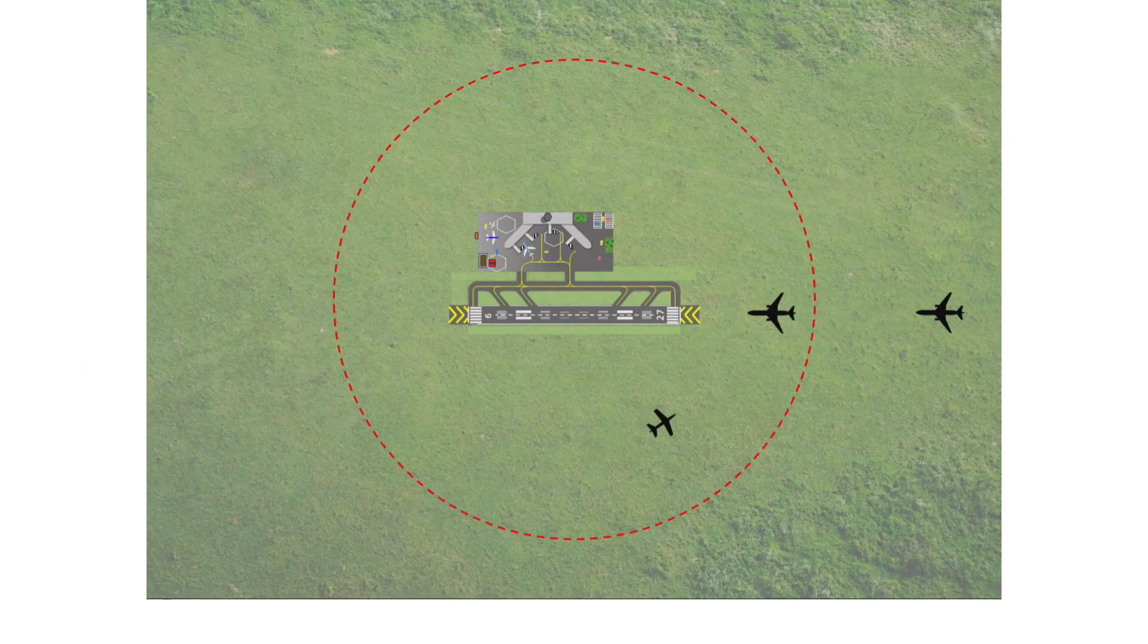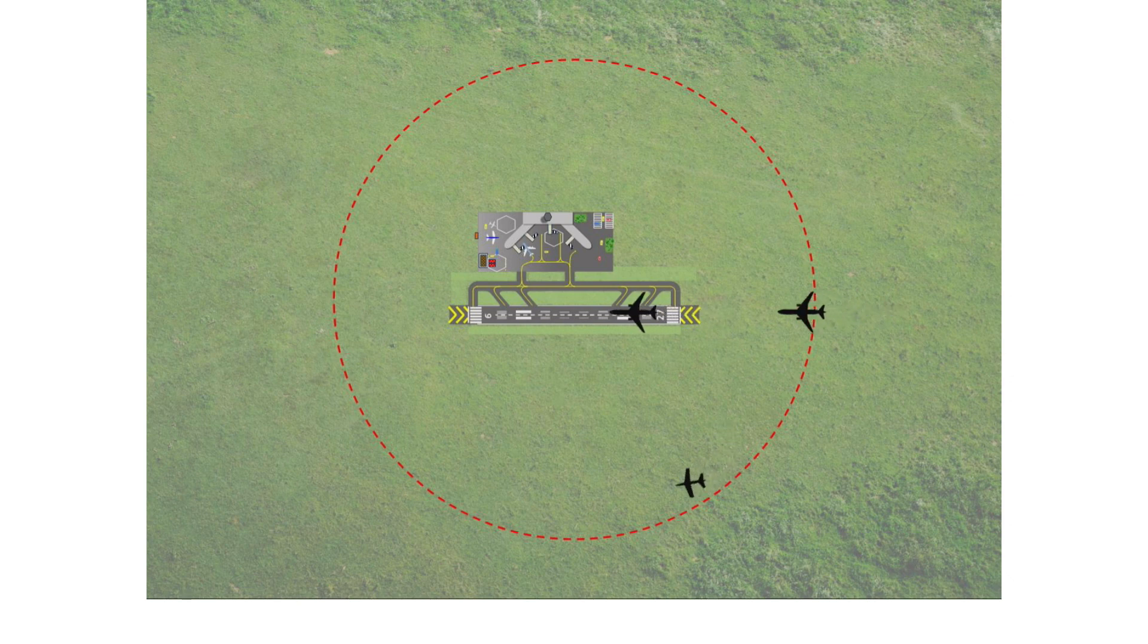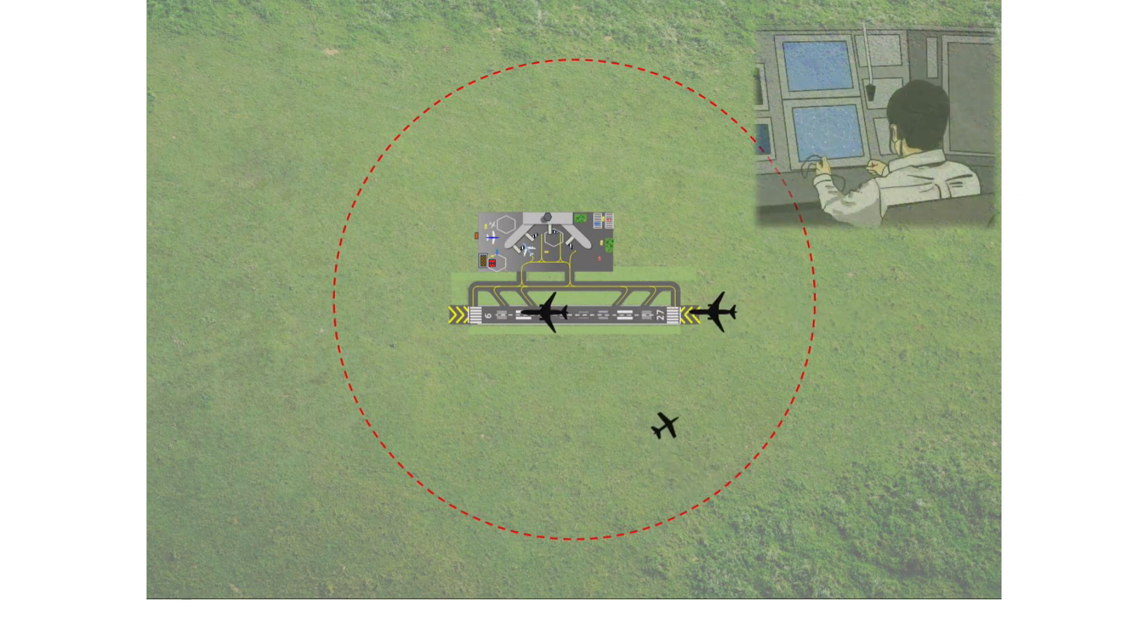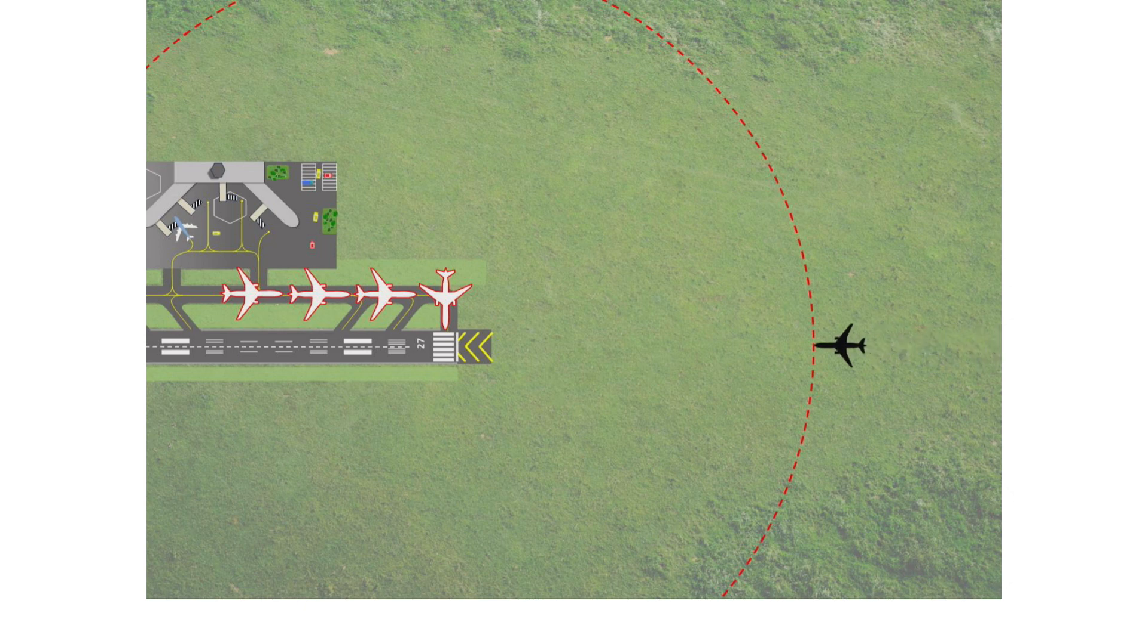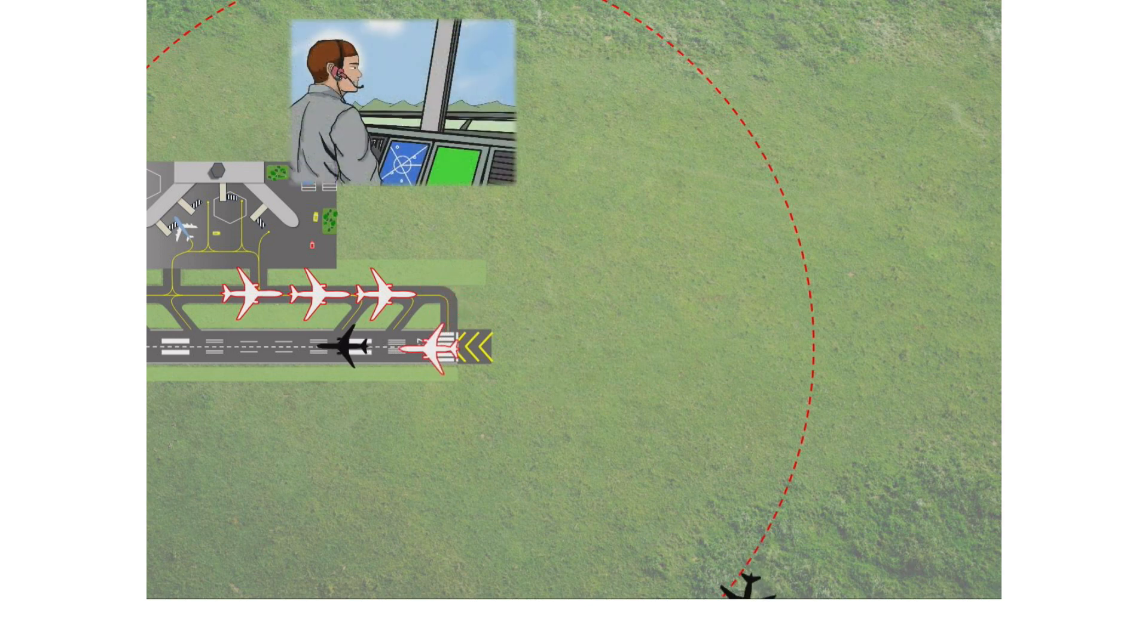The radar controller's control will be easier if the tower controller provides good separation and landing order. If the radar controller provides good separation between landing aircrafts, the tower controller becomes easier to control their traffic.